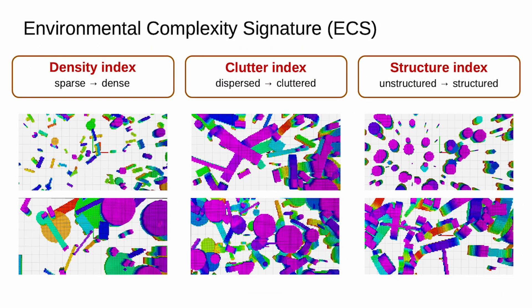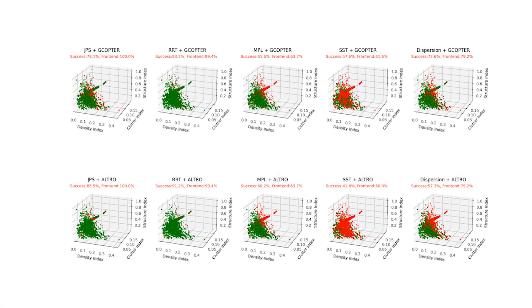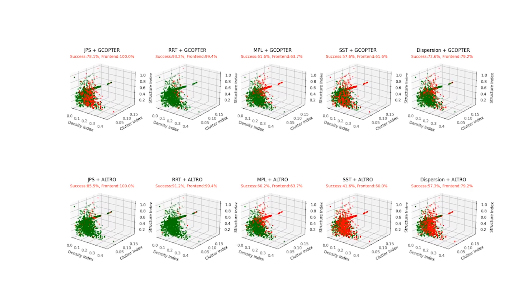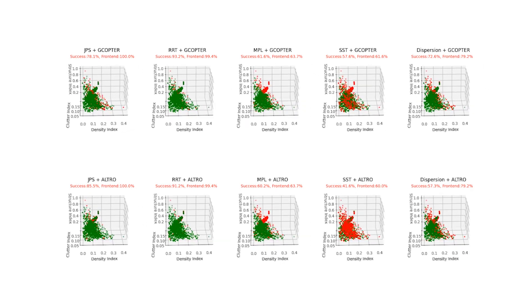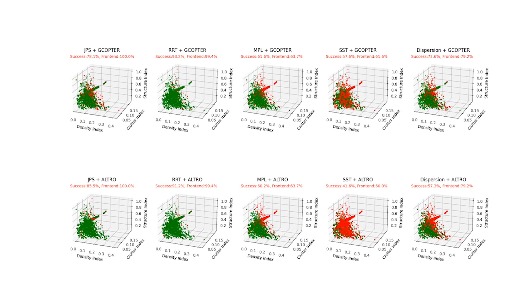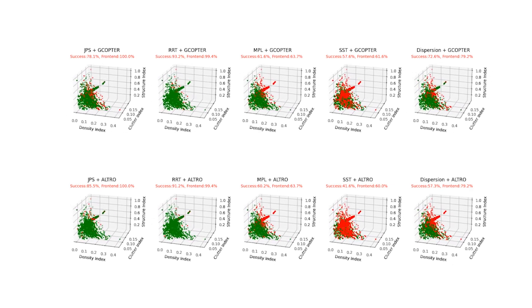To quantify environment complexity, we designed ECS, which describes environments from sparse to dense, dispersed to cluttered, and unstructured to structured. After running the planners on environments with varying ECS, we obtain the success scatter plot for each planner and additional metrics such as trajectory time and energy cost.